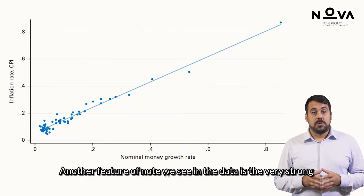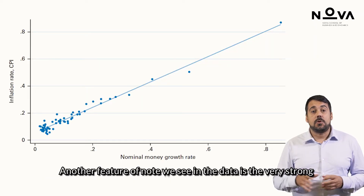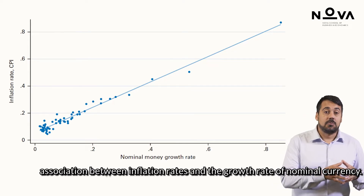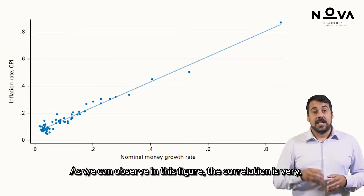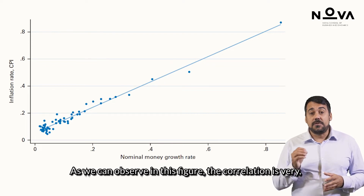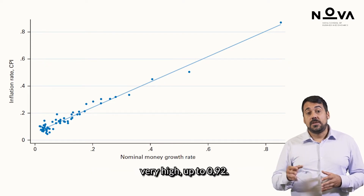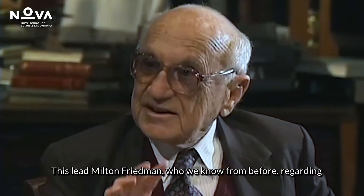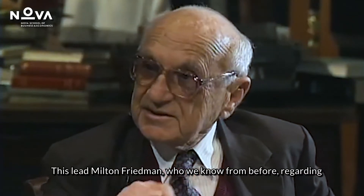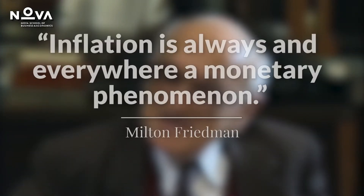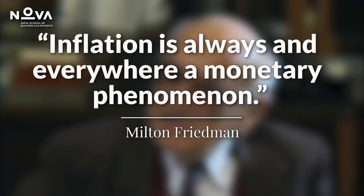Another feature of note we see in the data is the very strong association between inflation rates and the growth rate of nominal currency. As we can observe in this figure, the correlation is very high, up to 0.92. This led Milton Friedman — who we know from before regarding the Permanent Income Hypothesis — to say that inflation is, always and everywhere, a monetary phenomenon.